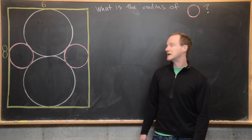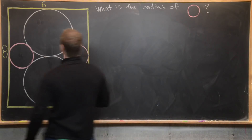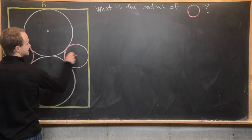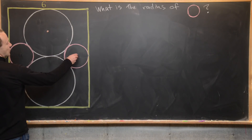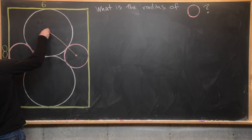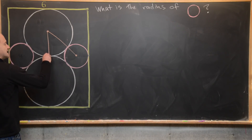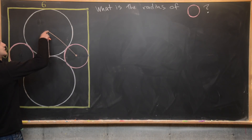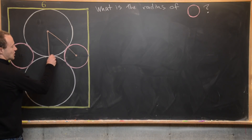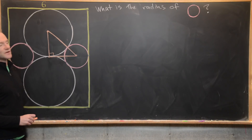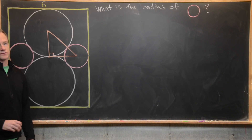Now let's get into the solution. I want to start with the center of the white circle and the center of the pink circle. I can draw a line segment between those two centers, then draw a radius of the pink circle down to the bottom, and then connect those endpoints with a horizontal line segment — and that gives me a right triangle.